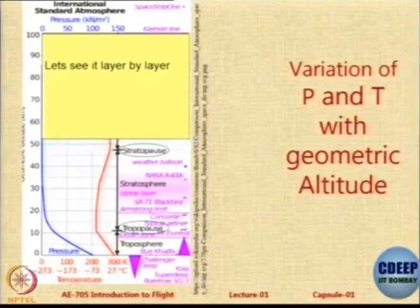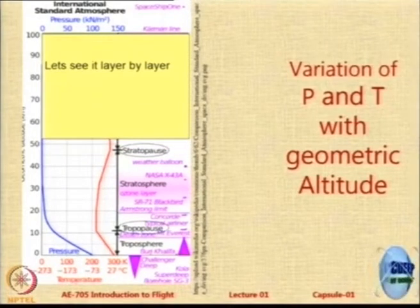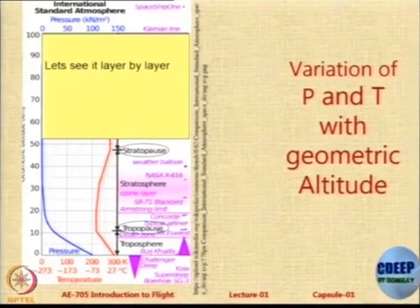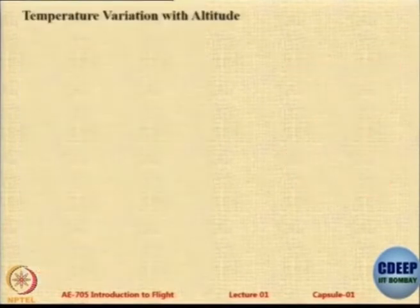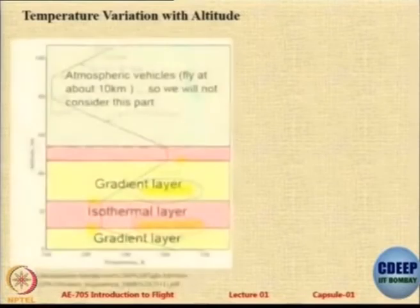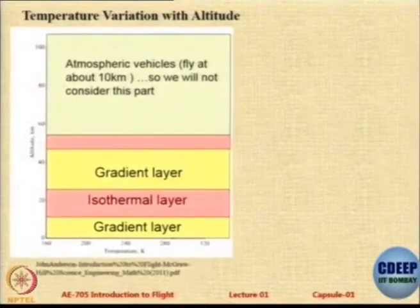Then we go to the stratopause, which is a very small zone. Again temperature remains constant, pressure still reduces. Above this we have what is called the mesosphere, mesopause, and thermosphere, but we are not too concerned about those because we would not look at that part for aircraft.